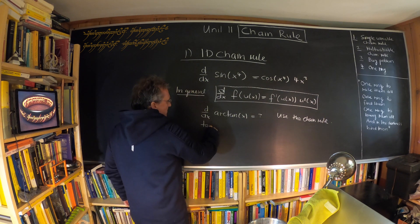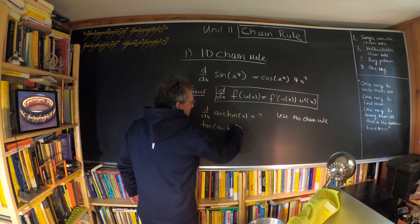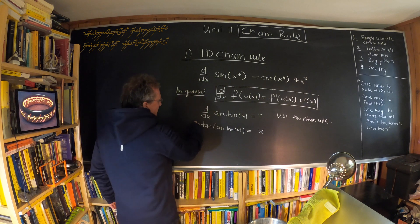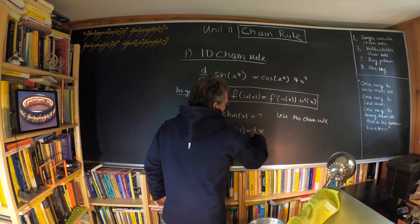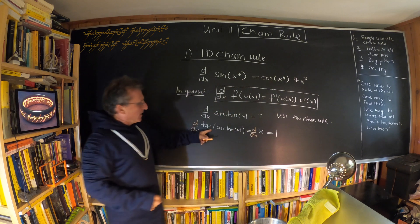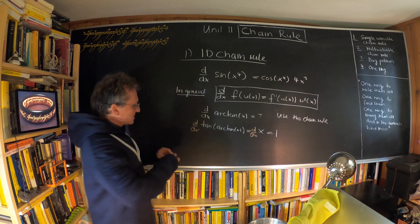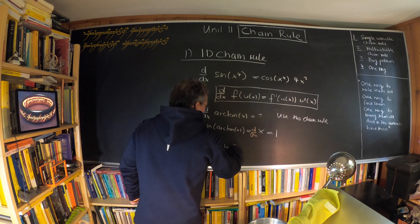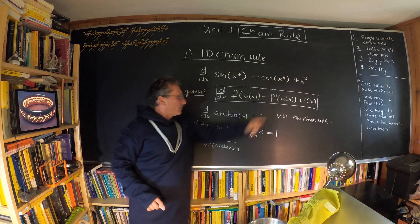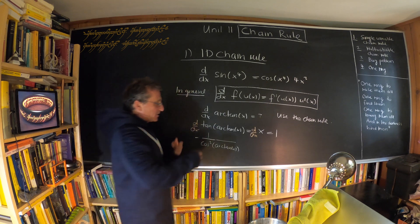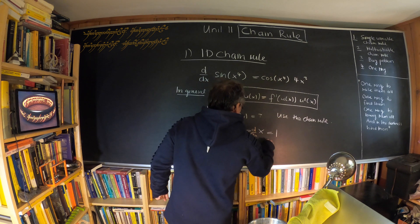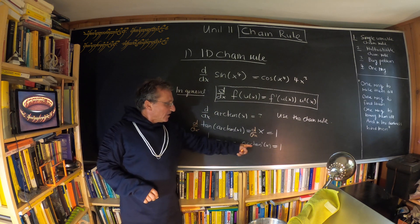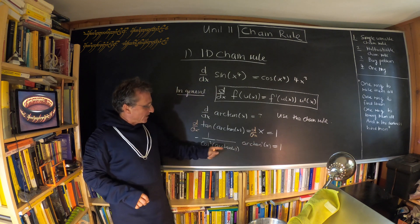We say that tan(arctan(x)) = x. Taking the derivative of both sides, the right side gives 1. On the left, the derivative of tangent is 1/cos²(x), so we get 1/cos²(arctan(x)) times arctan'(x) equals 1. This gives arctan'(x) = cos²(arctan(x)).